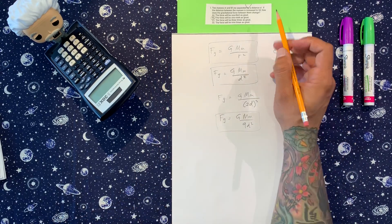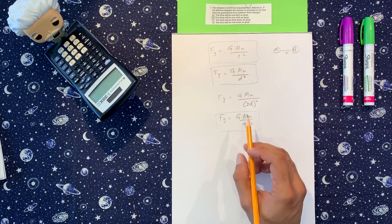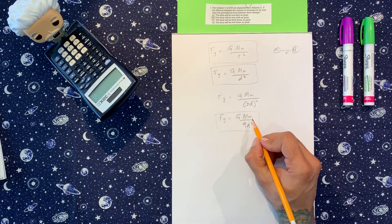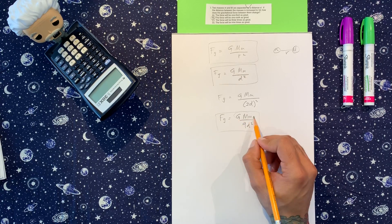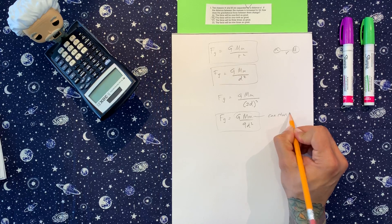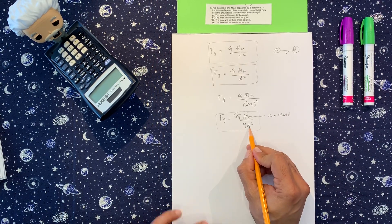And it says how does the gravitational force between them change? So one thing to keep in mind, this mass, this mass, and this gravitational force cannot change. These are constant. You can't change them. The only thing that can change is the force and the distance between the objects.